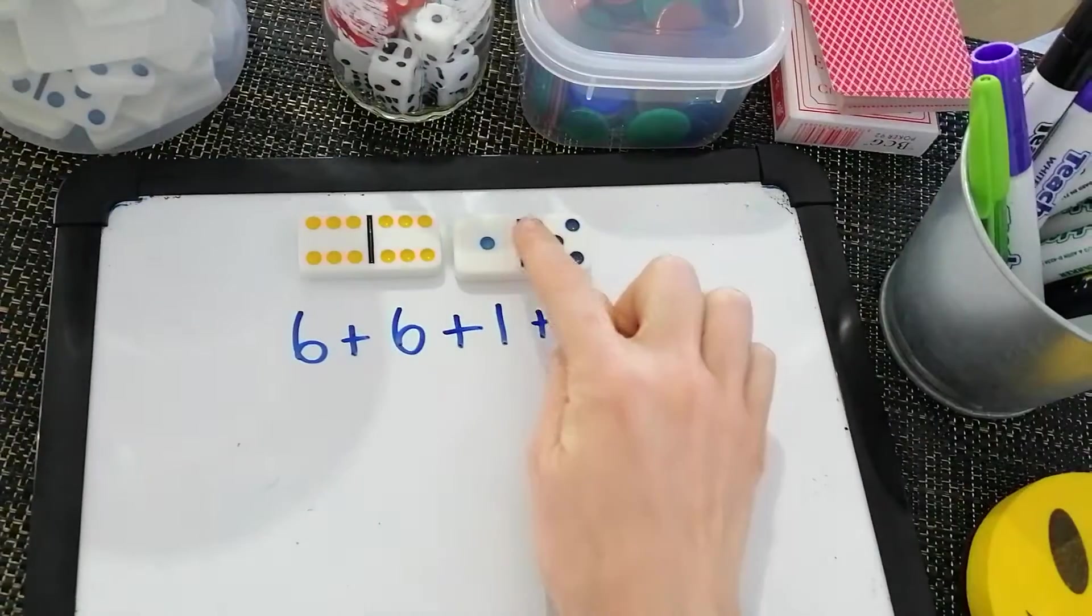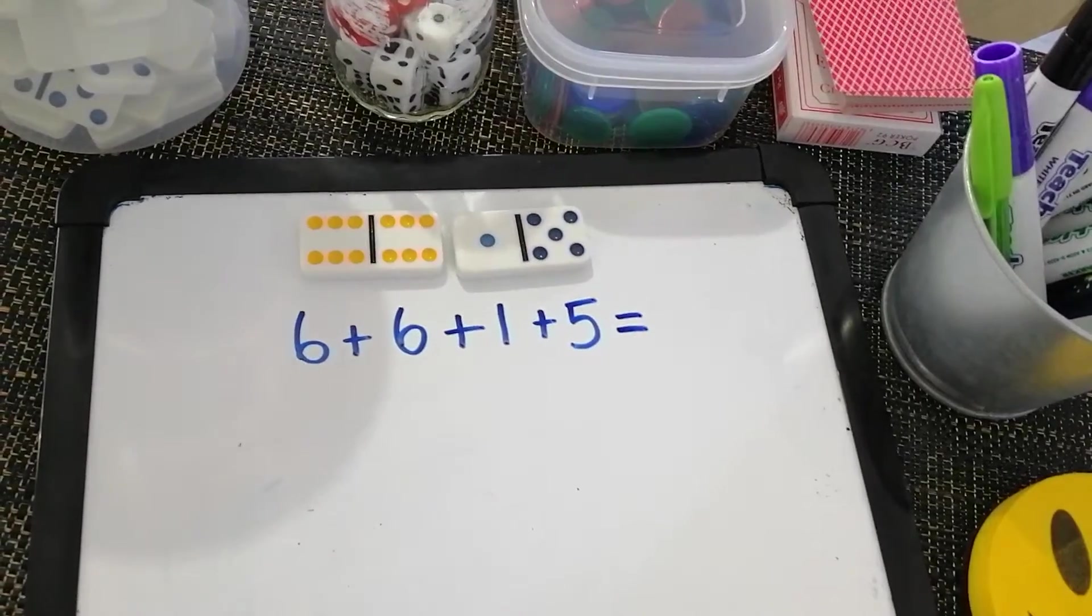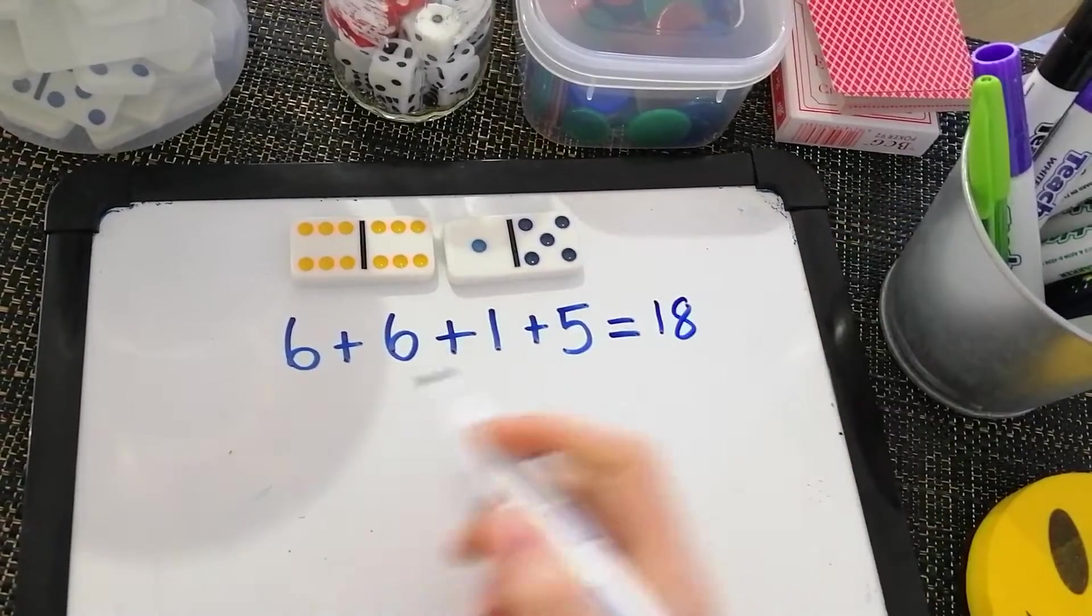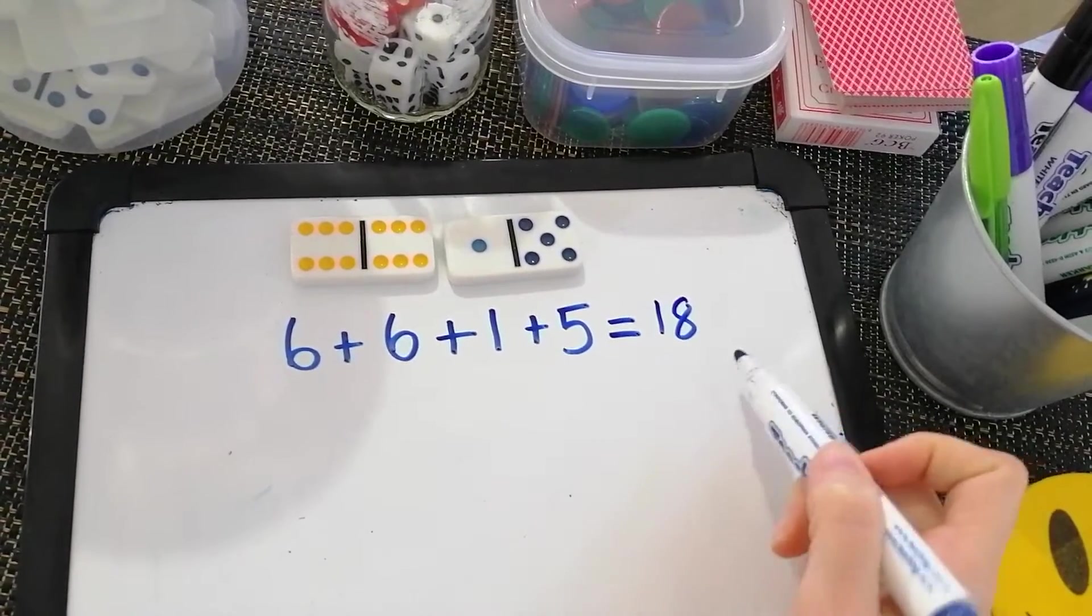Thirteen, fourteen, fifteen, sixteen, seventeen, eighteen. The total number of dots is eighteen. Six plus six plus one plus five equals eighteen.